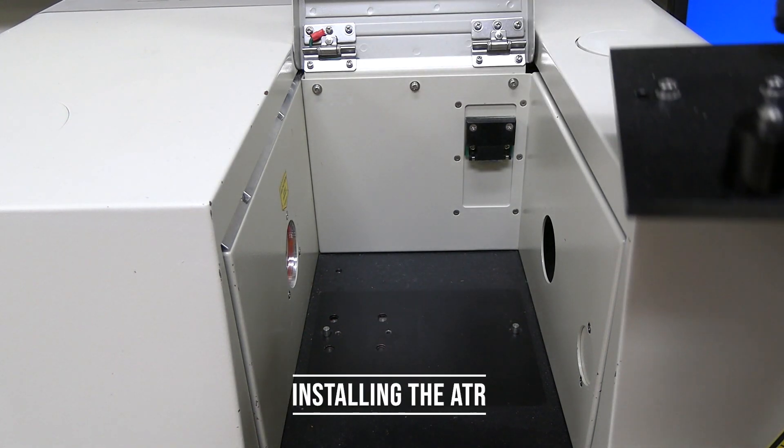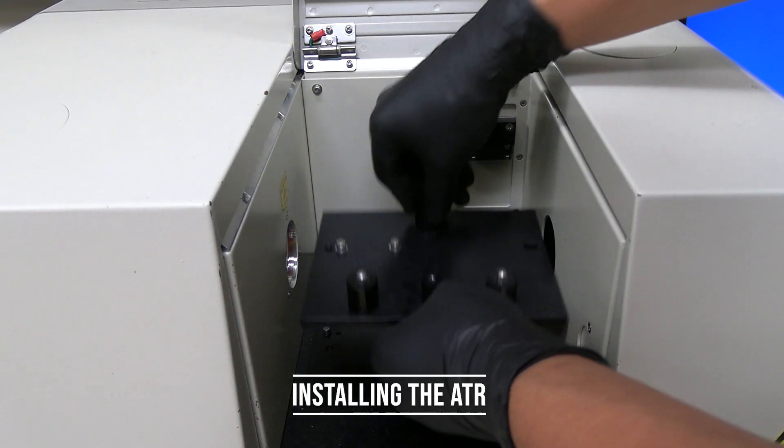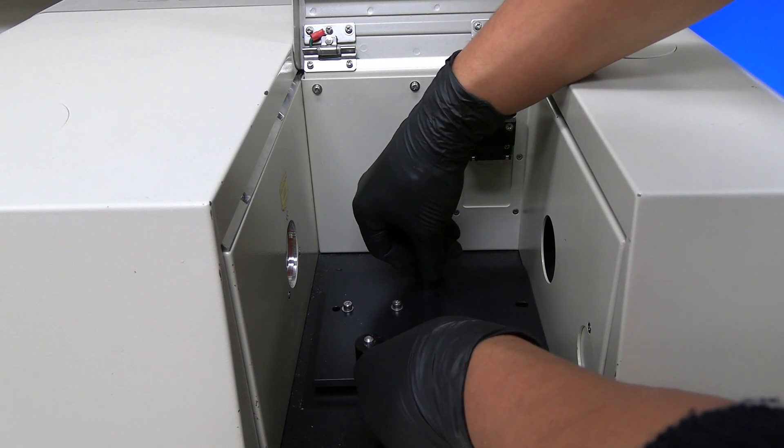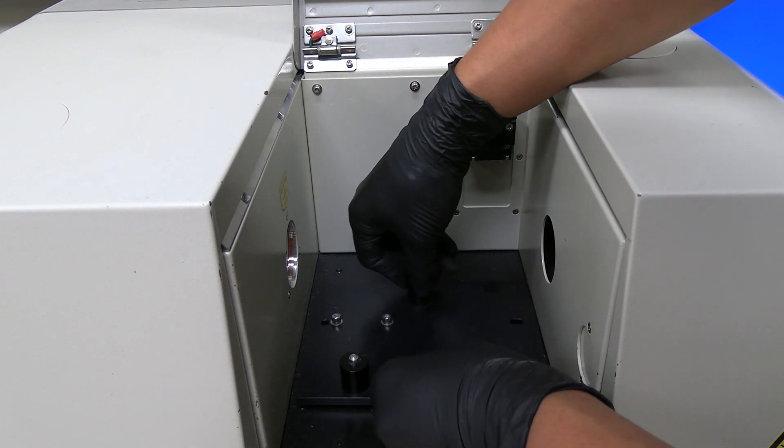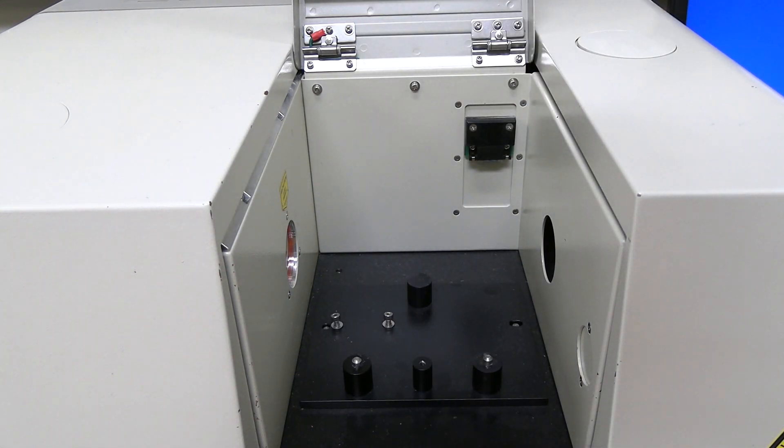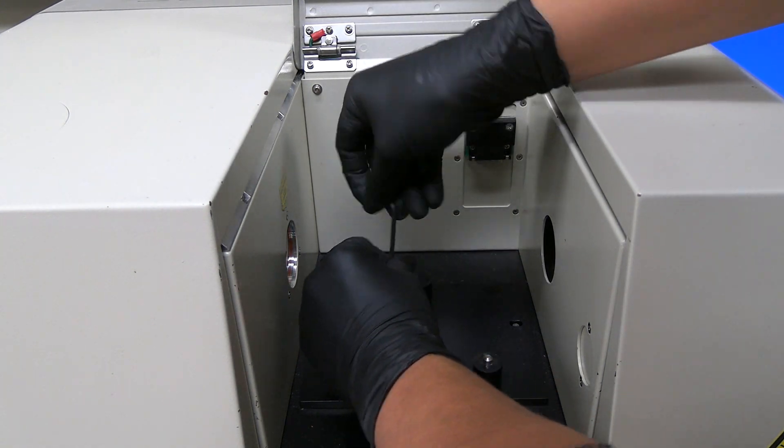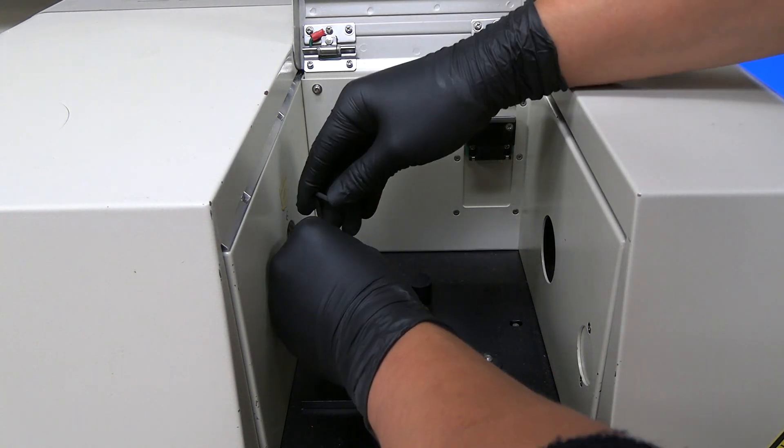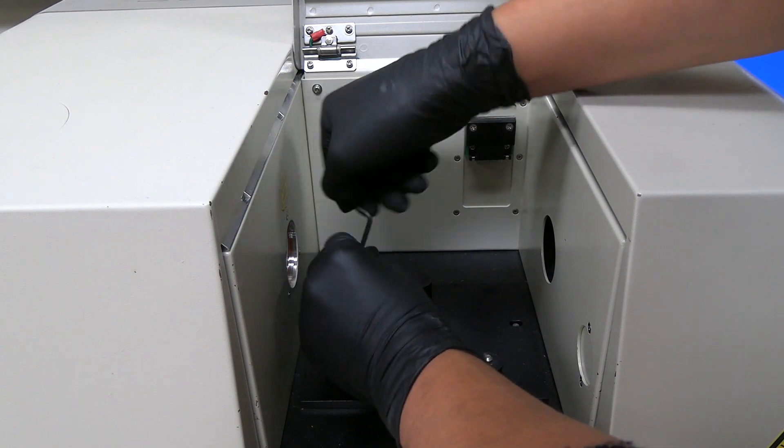Install the ATR. Insert the base plate into the sample chamber. There are pegs in the sample chamber that align with the holes on the base plate. Use an Allen key to secure the base plate to the instrument with screws. Be careful not to touch the window on the left side of the cell.